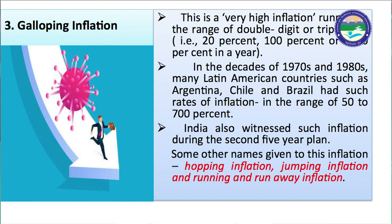Galloping inflation is very high inflation running in the range of double or triple digits — like 20%, 100%, or 1000% increase in a year. Galloping inflation is when prices increase between 20% to 1000% per annum. In the 1970s and 1980s, many Latin American countries such as Argentina, Chile, and Brazil had inflation in the range of 50 to 700%. India also witnessed such inflation during the Second Five-Year Plan. Other names for this type include hopping inflation, jumping inflation, and running or runaway inflation.